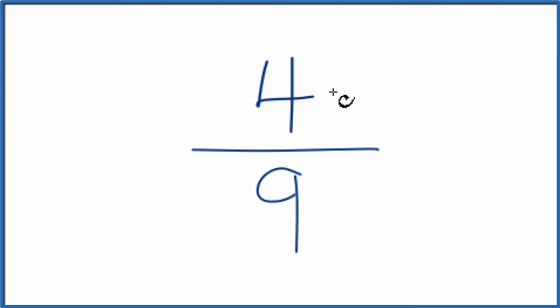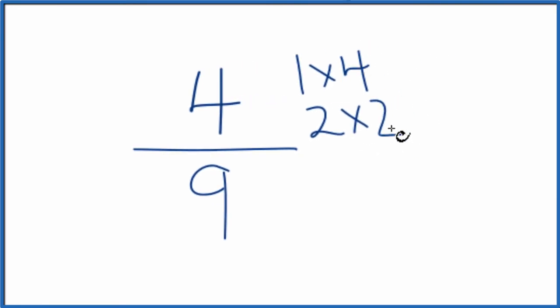So let's write the factors of 4 and 9. 1 times 4, that gives us 4. 2 times 2, that's 4. That's about it. For 9: 1 times 9 and 3 times 3. So if we look at the numerator here and the denominator...